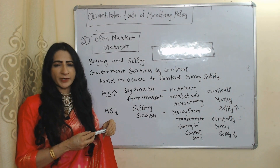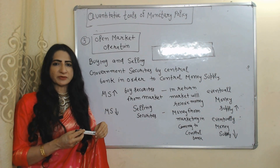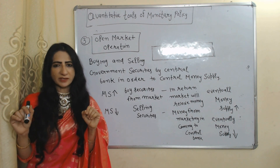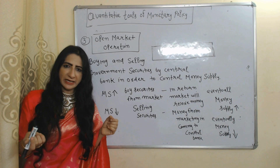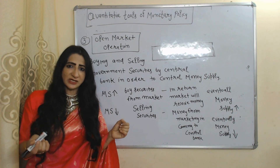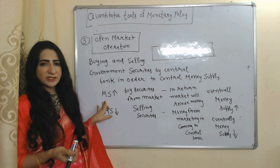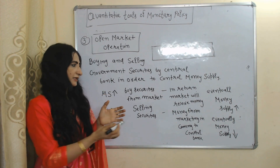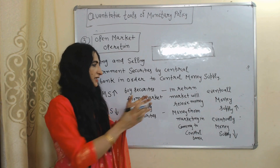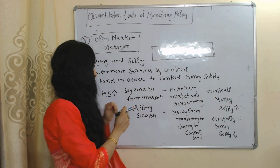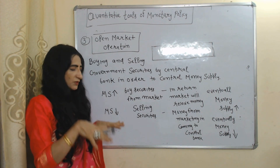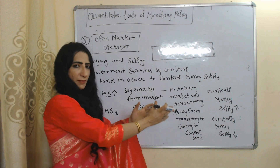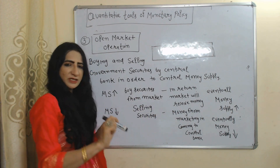The next quantitative tool is Open Market Operations (OMO) — buying and selling of government securities by the central bank in order to control money supply. If the central bank wants to increase money supply, it will start buying securities from the market — as a result the market receives money and money supply increases. On the other hand, if the central bank wants to reduce money supply, it will start selling securities in the market — as a result, money from the market comes to the central bank and money supply reduces.